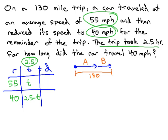We can now finish our table by multiplying rate times time. 55 times T is 55T, and 40 times the entire 2.5 minus T, which means we have to distribute. This will give us 100 minus 40T.